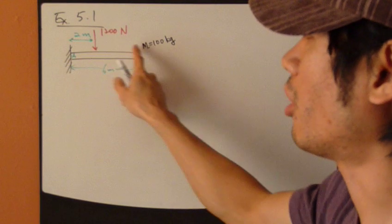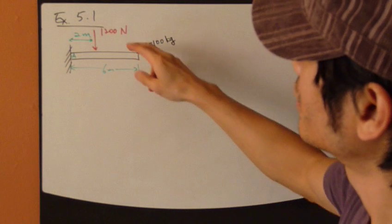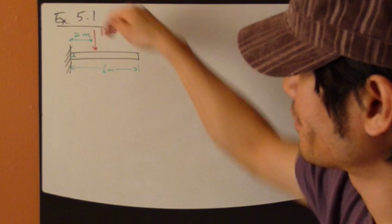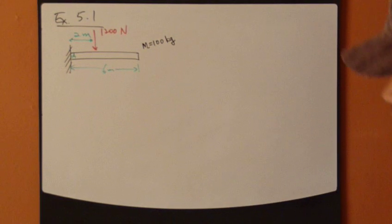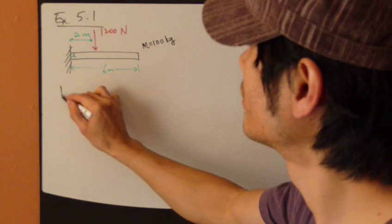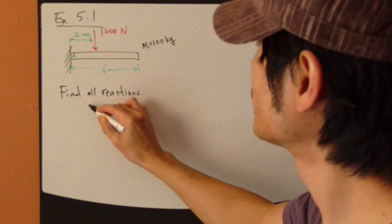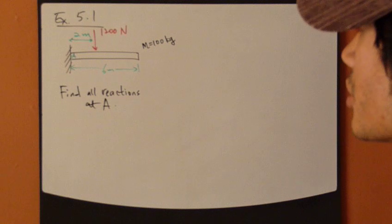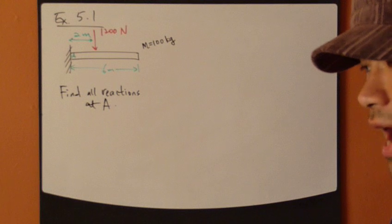Now we have a rigid body, a metal bar that's glued to a wall this way. You apply a force, 1,200 Newton force at this location, 2 meters from the wall. And this metal bar is 6 meters long, and the mass of the bar is 100 kilograms. Now, I'd like you to find all the reactions at point A. Actually, go through the calculation and find the reactions. It could be reaction forces as well as reaction moments.